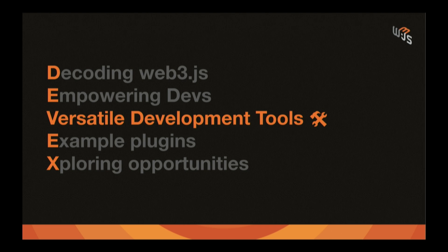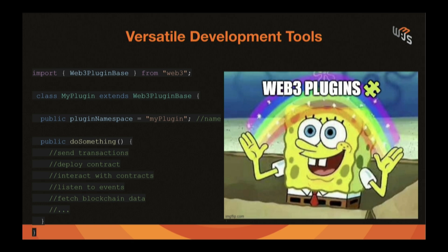Now let's talk about the game-changer versatile development tool: Web3 plugins. Web3 plugins is a new feature released in Web3.js version 4. We came up with this plugin system to provide projects and developers a way to create their SDKs and extend any Web3.js capabilities without needing to fork the Web3.js repo. To create a plugin, you just install the library via npm, import the Web3 PluginBase module, create a JavaScript class that inherits from Web3 PluginBase, give it a name, and then add any methods with any functionality you want — deploying contracts, listening to events, interacting with contracts, sending transactions, or adding external libraries.